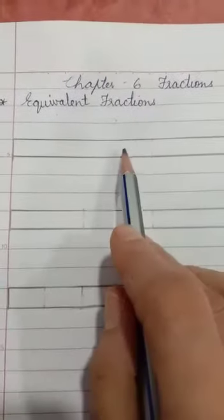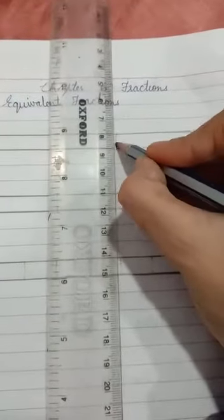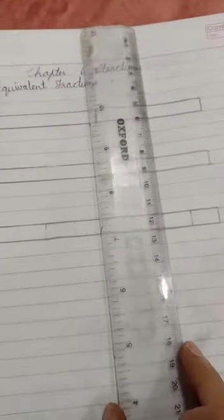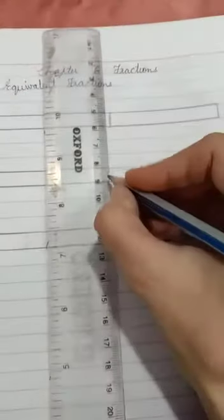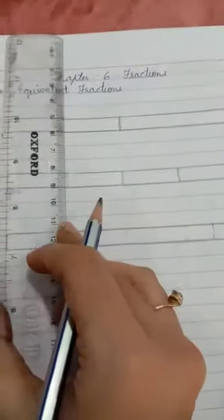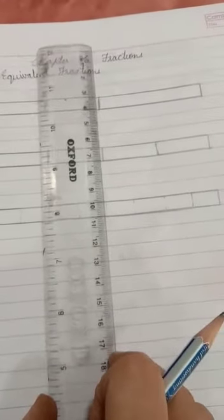Let's divide a strip into two halves. The second strip into four equal parts, and the third strip into eight equal parts.